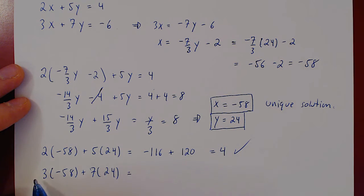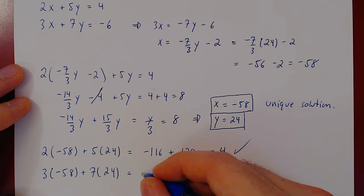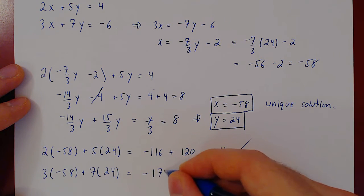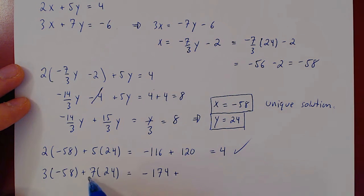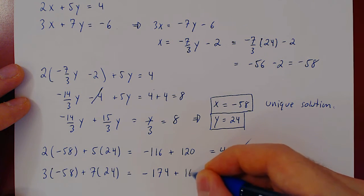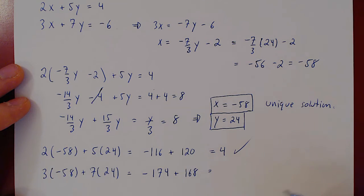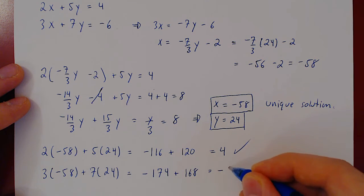Well, 3 times 50 is 150, 3 times 8 is 24, that's minus 174, plus 7 times 20 is 140, 7 times 4 is 28, so that's plus 168. And negative 174 plus 168 obviously is negative 6.